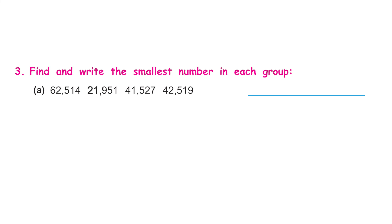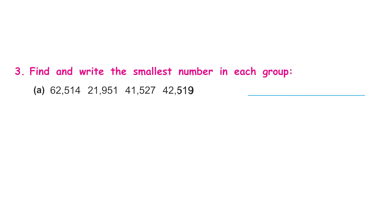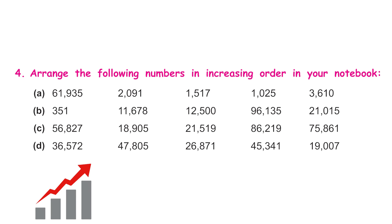Find and write the smallest number in each group. Each number has five digits. Starting from the left-most side, the digits are: 6, then 2, then 4, then 4. Two is the smallest of all, so the smallest number is twenty-one thousand nine hundred and fifty-one.